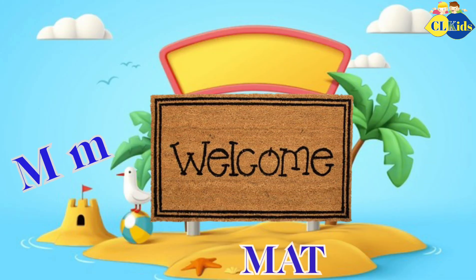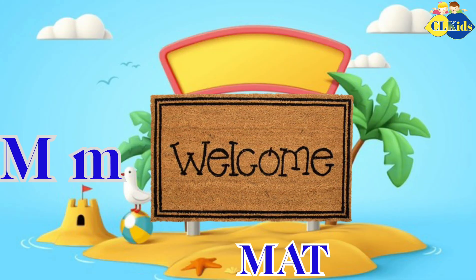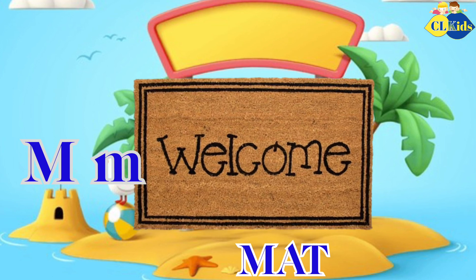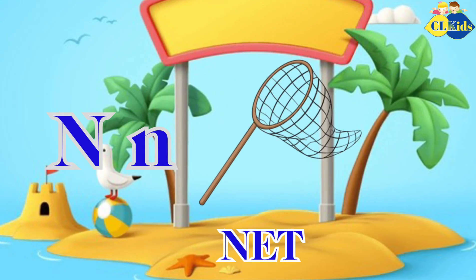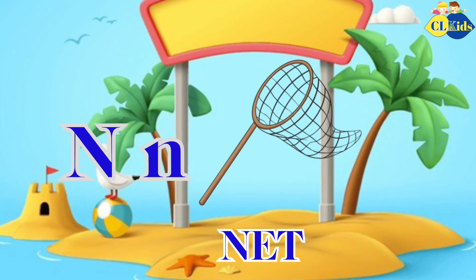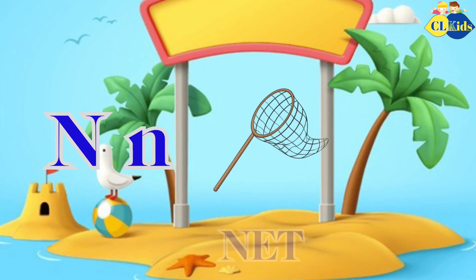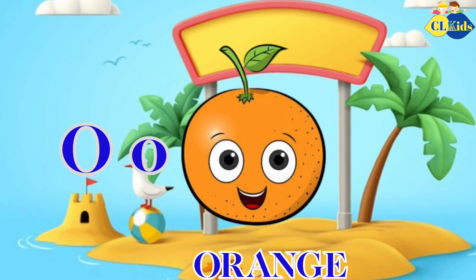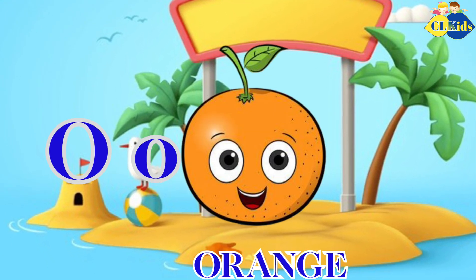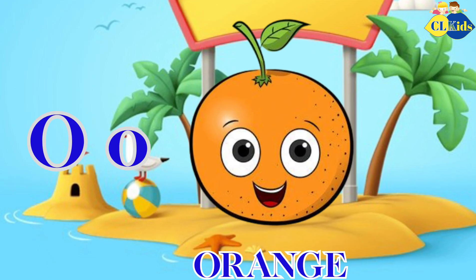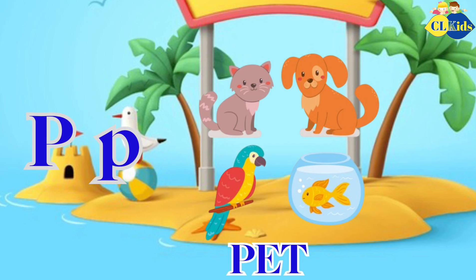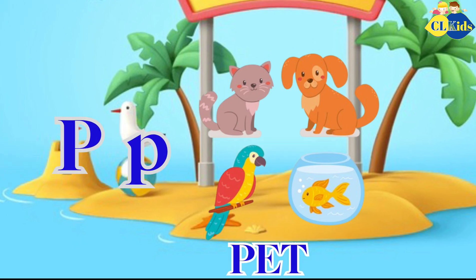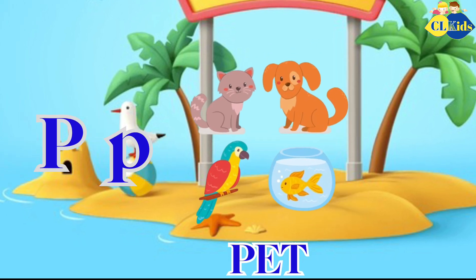M is for Mat. M-M-Mat. N is for Net. N-N-Net. O is for Orange. O-O-Orange. P is for Pet. P-P-Pet.